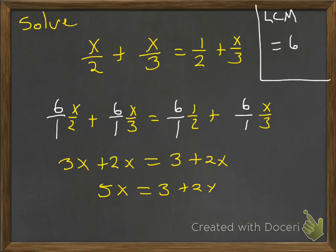And again, all the x's want to hang out. But in order to move from one side to the other, we've got to do the opposite. So right now, we've got a plus 2x. So we're going to do the opposite, which would be minus 2x. We're going to subtract 2x from both sides. And we'll have 3x equals 3.